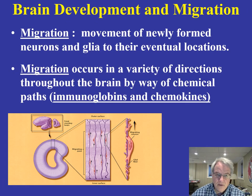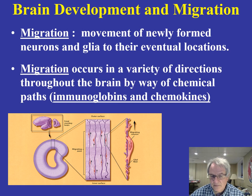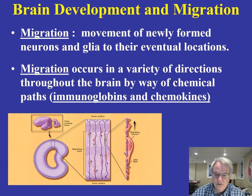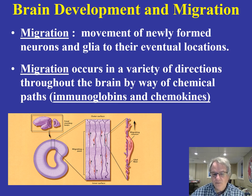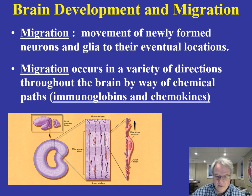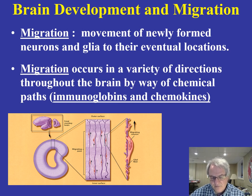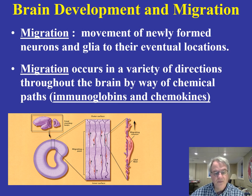Migration refers to newly formed neurons going to their eventual locations. This migration occurs throughout the brain in a variety of different directions by way of chemical pathways — specifically immunoglobulins and chemokines — which direct neurons to find very specific target areas during the migration process.